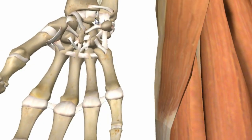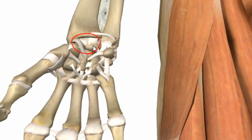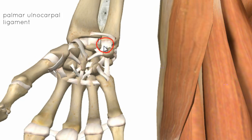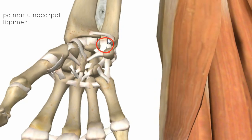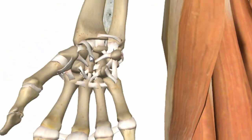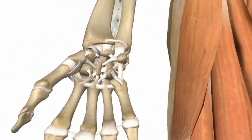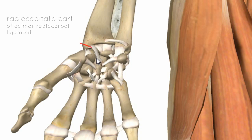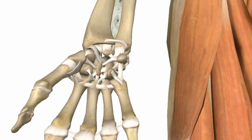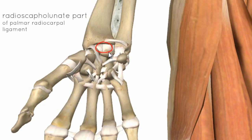Looking at the palmar surface, you can see ligaments running from the radius to the carpal bones — these are the palmar radiocarpal ligaments. They can be broken into two parts: one part connects from the radius to the capitate bone, called the palmar radiocarpal ligament, and the other part connects from the radius to the scaphoid and lunate, called the radioscapholunate part of the palmar radiocarpal ligament.